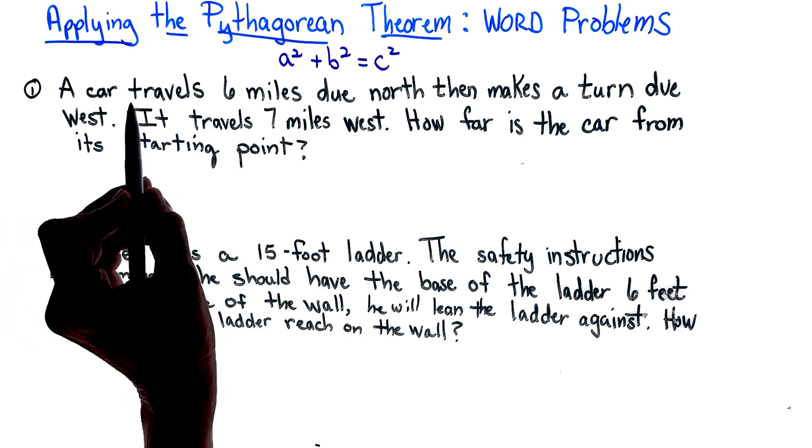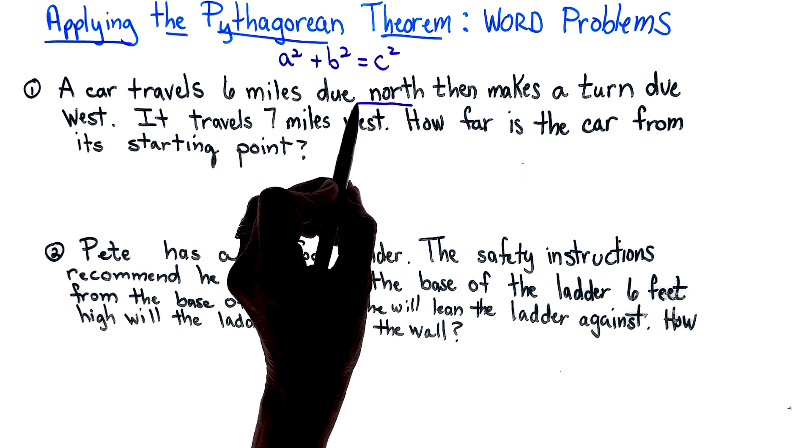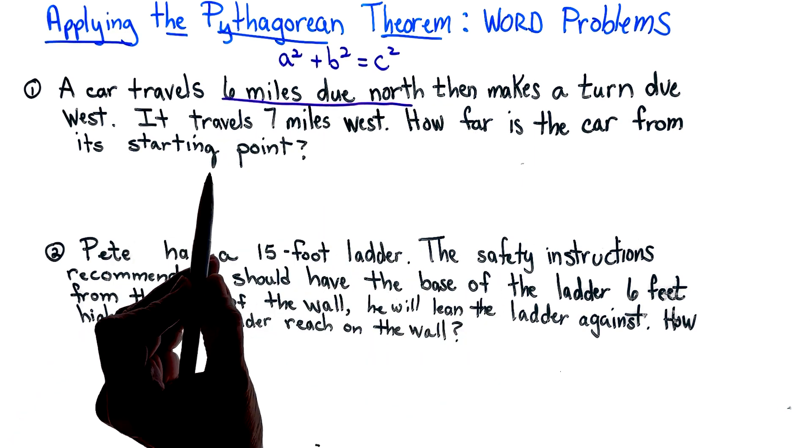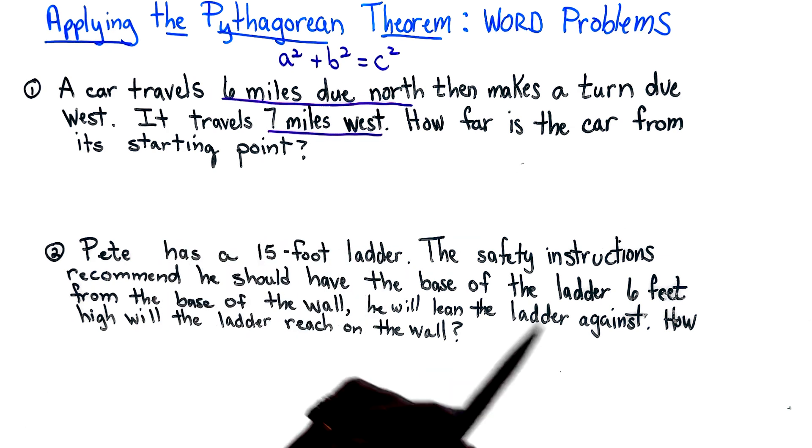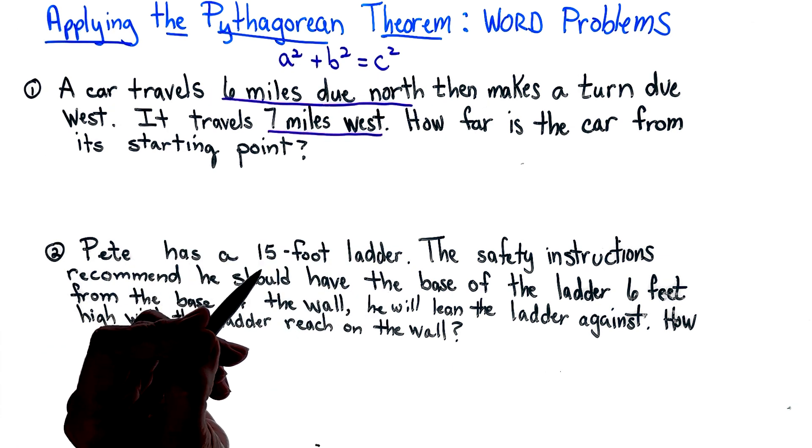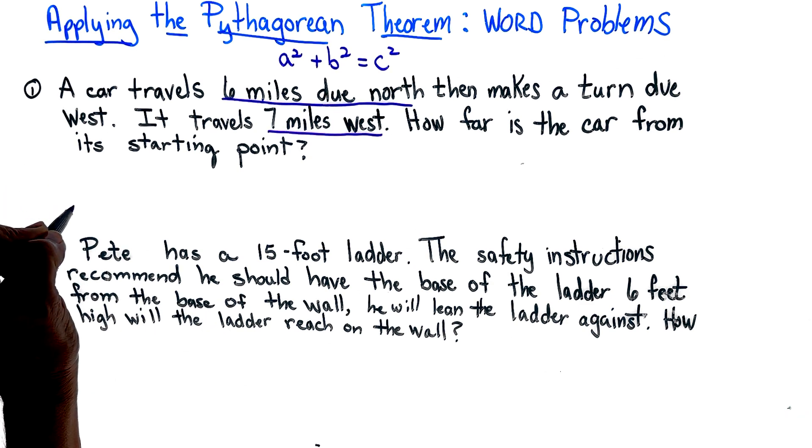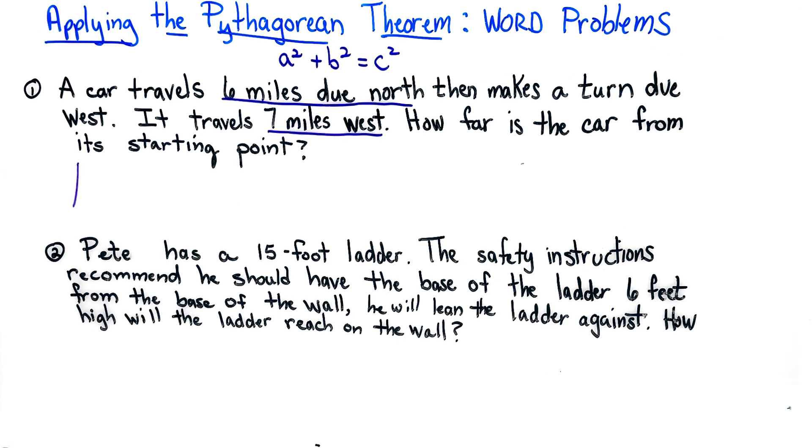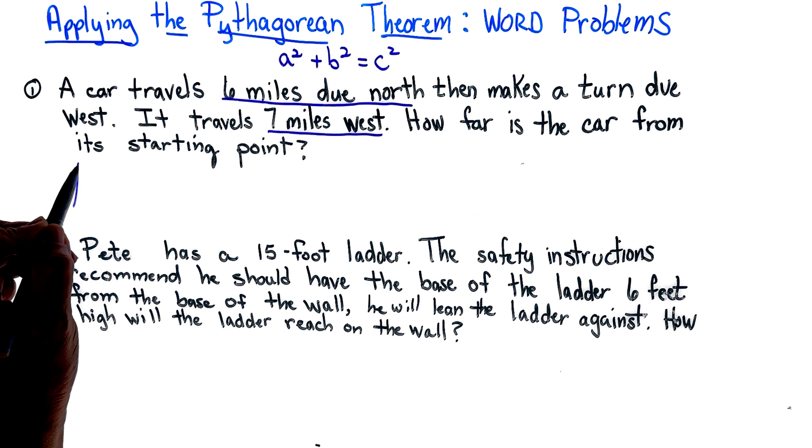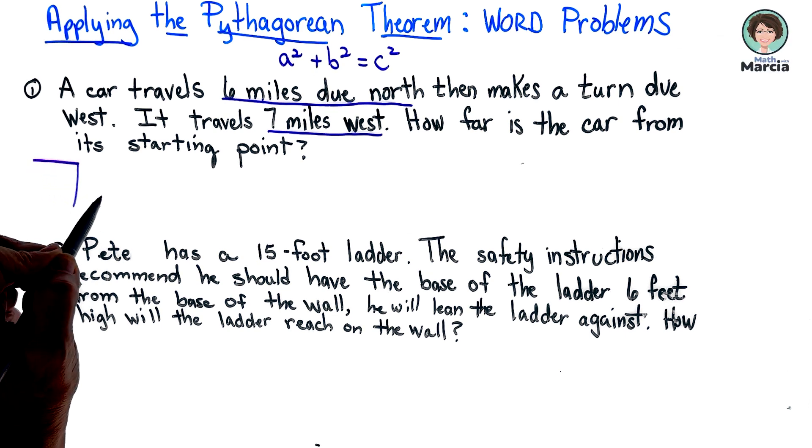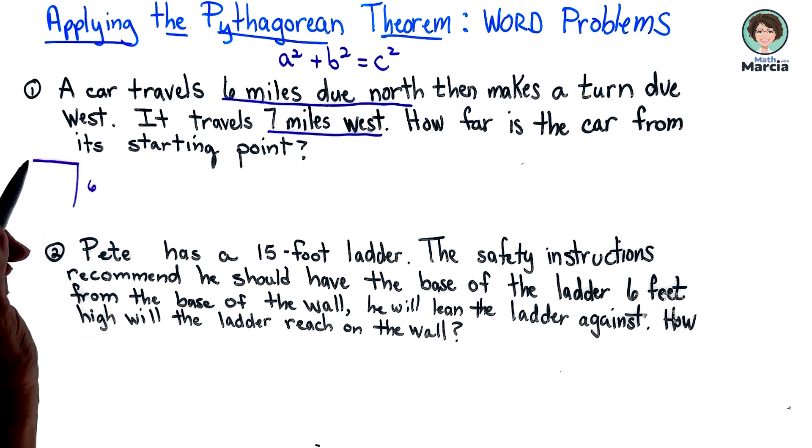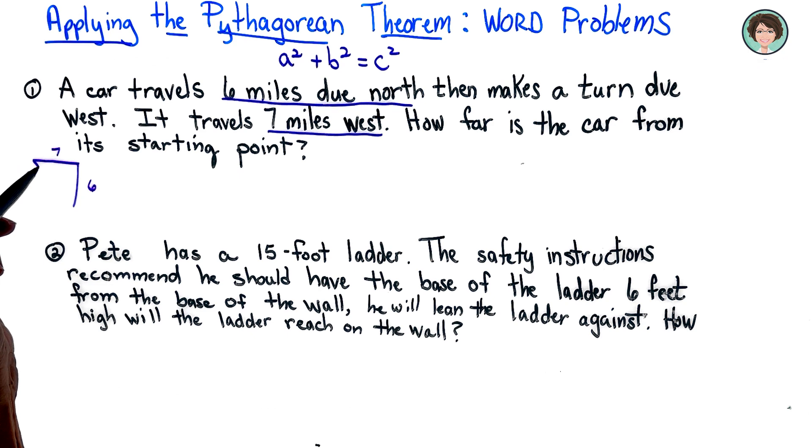Let's mark the text. A car travels six miles north and then makes a turn and goes seven miles west. Let's draw a picture. Here is my little car, yes I am traveling north in a straight line. My line might not look too straight but we're going to pretend that it is. Now I am going west. This is six miles, this is seven miles.